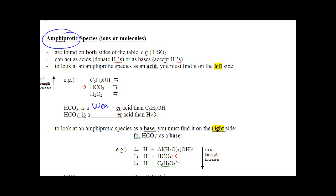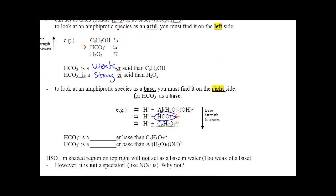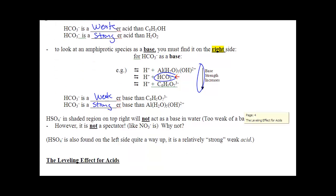But you'll also notice that HCO3- is on the base side of things. So bases increase in strength going down that side. So HCO3- is weaker than C6H5O-, but it's stronger than Al(H2O)5(OH)2+. If you're on both sides of the chart, you're amphiprotic. And you can act as an acid or a base, except this.